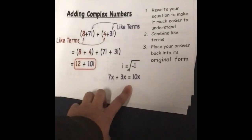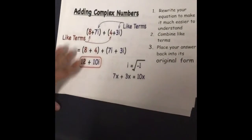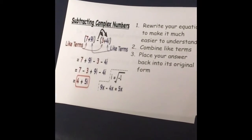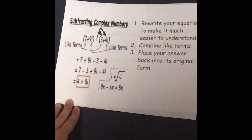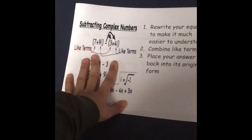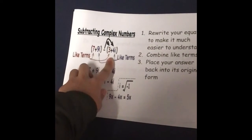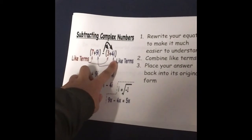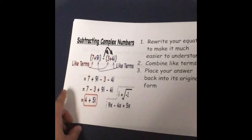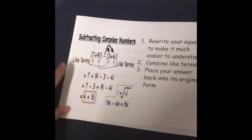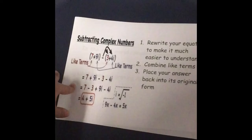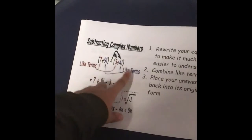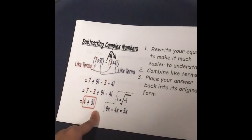7x plus 3x equals 10x. Subtracting complex numbers. Here are your like terms: 7 minus 3, and 9i minus 4i. 9i minus 4i will give you 5i.